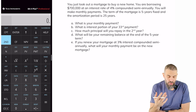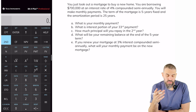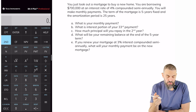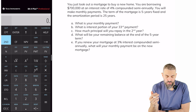So this problem is that you're buying a home — you're going to be borrowing $700,000, the interest rate is 4% compounded semi-annually, you'll make monthly payments, the term is five years fixed, and the amortization period is 25 years. So it's a typical mortgage question.